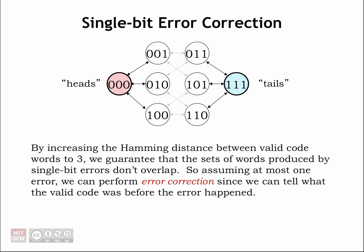By increasing the Hamming distance between valid codewords to 3, we guarantee that the sets of codewords produced by single-bit errors don't overlap. The set of codewords produced by corrupting 000 has no codewords in common with the set of codewords produced by corrupting 111.